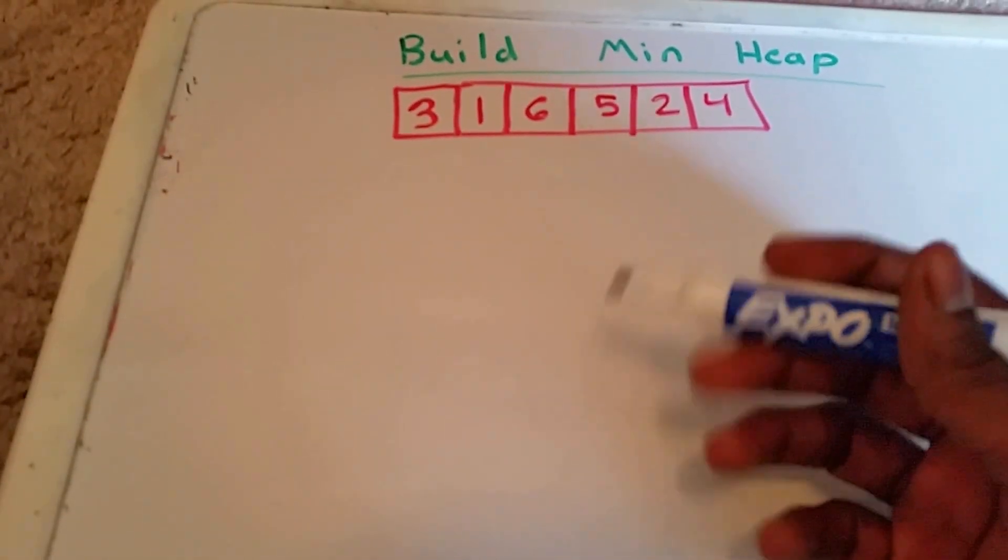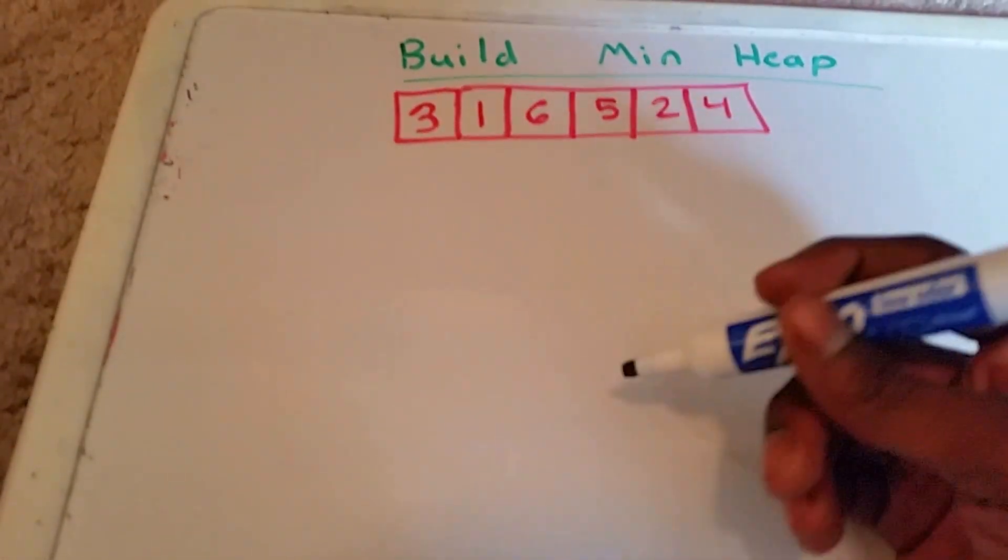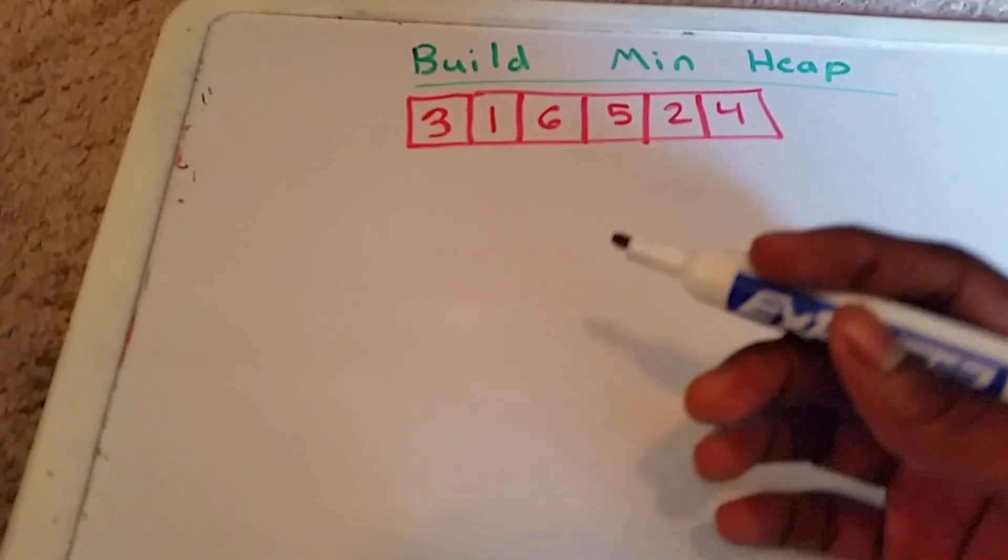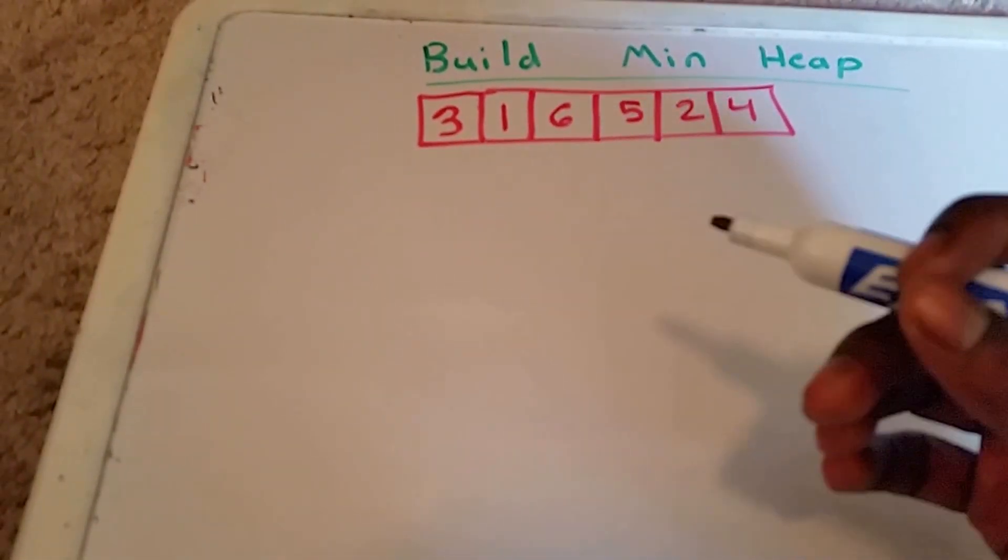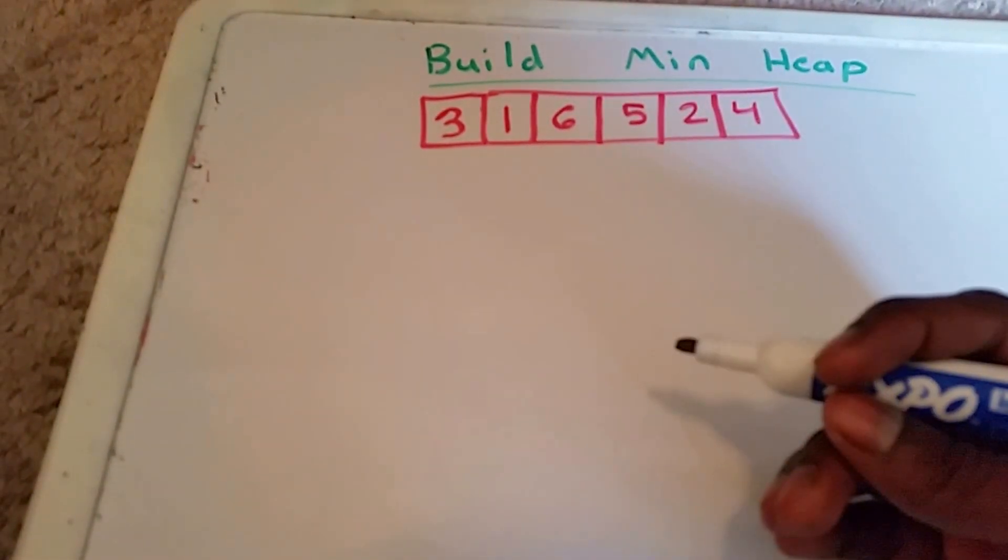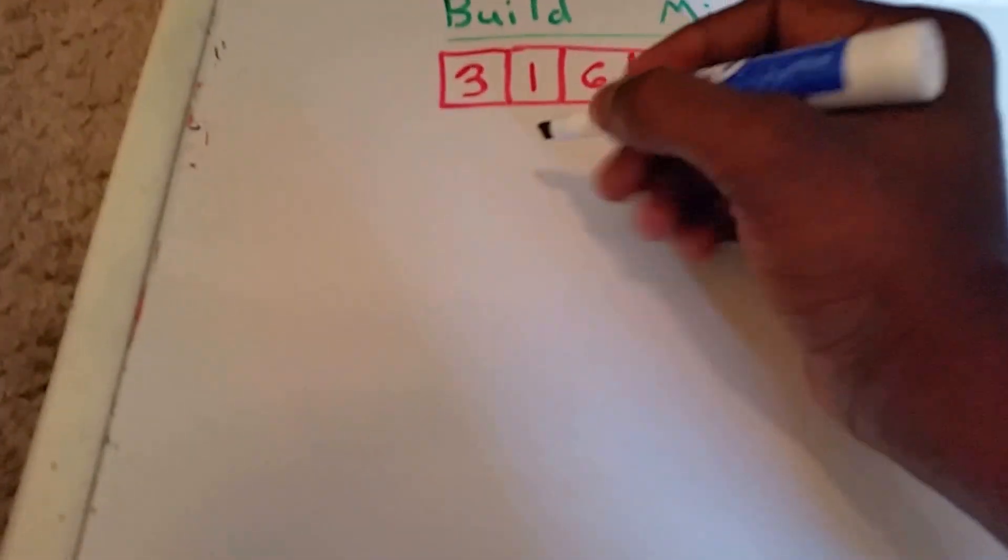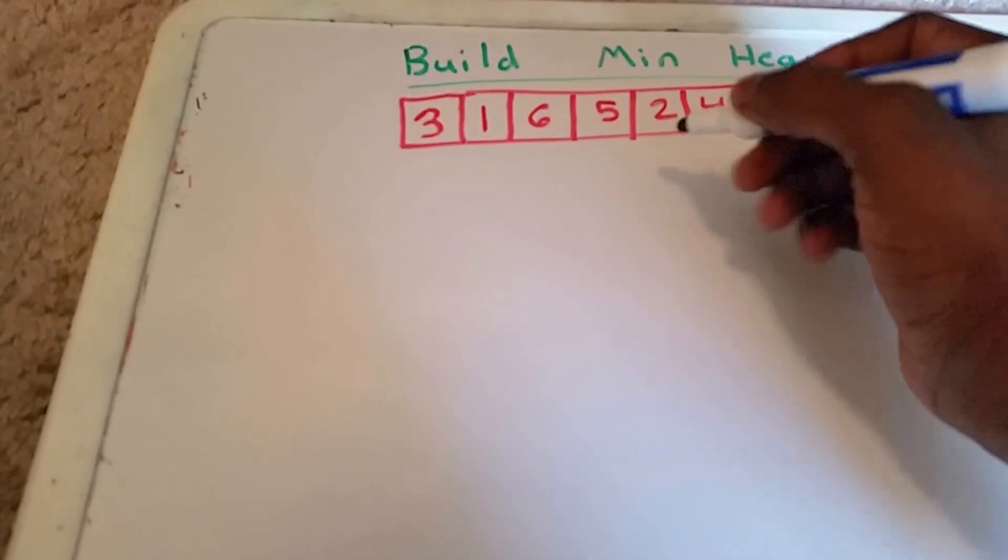And then we're going to keep inserting each element from the array. This technique or method is called the Williams method, after the guy who invented the binary heaps. So let's go ahead and get started here.